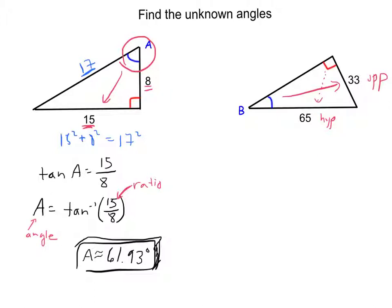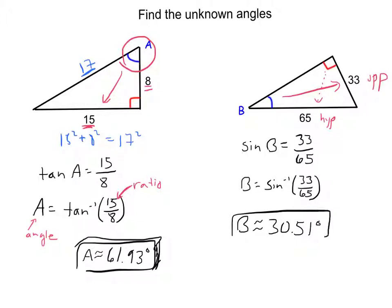Set up the ratio. So I know what the ratio is, I want to go back to get the angle. So moving from ratio to angle, I use the inverse, in this case inverse sine. And stick that in and evaluate it. Okay, 30.51 degrees.